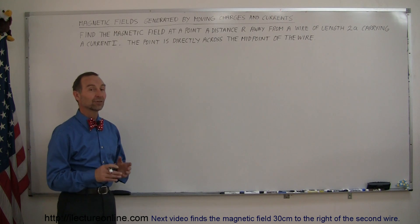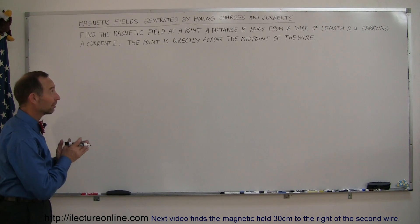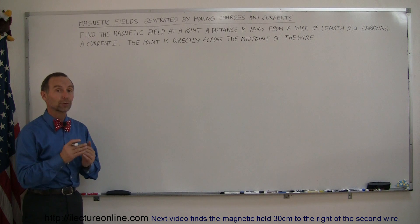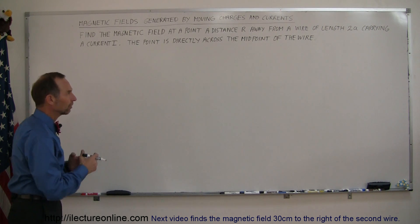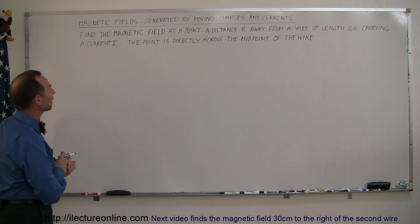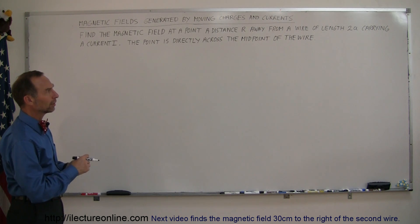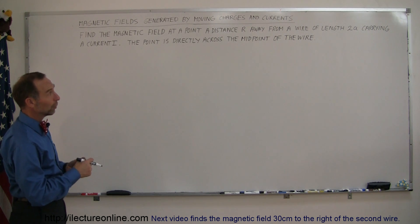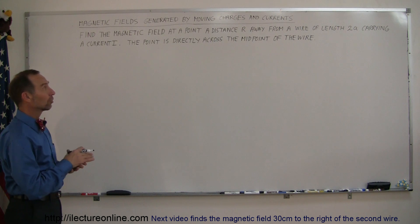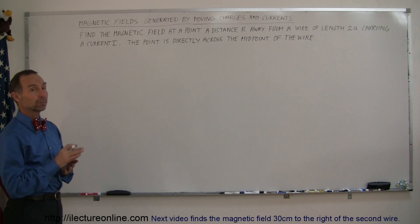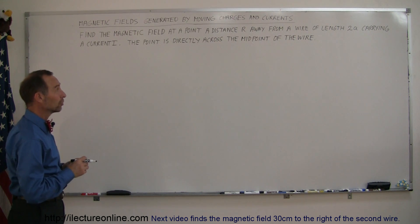Welcome to iLecture Online. Here's another example of how to find a magnetic field, in this case due to a current-carrying wire. The problem says: find the magnetic field at a point a distance r away from a wire of length 2a carrying a current i. The point is directly across the midpoint of the wire, which will make the problem a little bit easier to do.